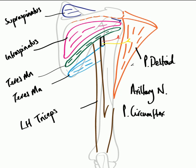In this short video we've detailed the scapulohumeral muscles: supraspinatus, infraspinatus, teres minor, teres major, the long head of triceps, and posterior fibres of deltoid. We have highlighted the quadrangular space and its boundaries and the two important structures which pass through it.